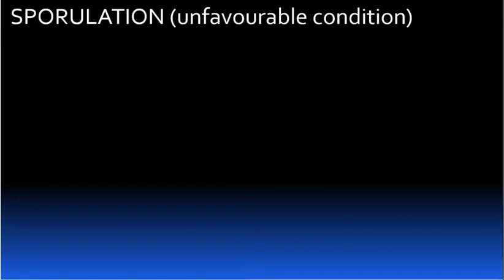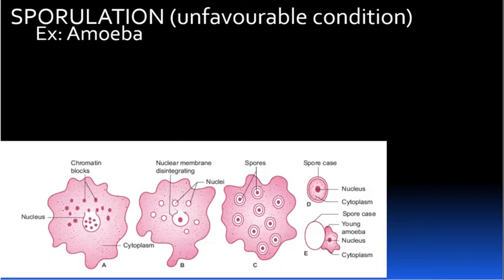Next, we are going to see sporulation under unfavorable conditions. Example for sporulation is Amoeba. Amoeba multiplies by sporulation without encystment.